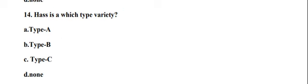Question number 14: Hath is which type of variety? Options are type A, type B, and none of the above. The right answer is option A, type A — meaning female flowers are open at morning time.